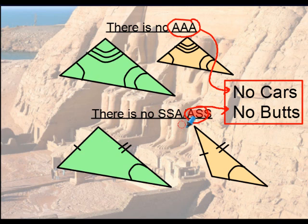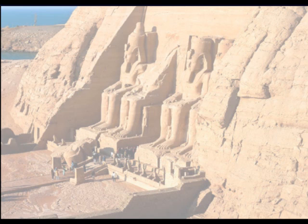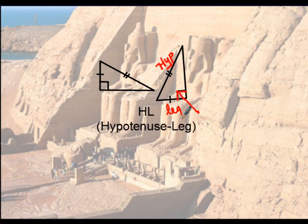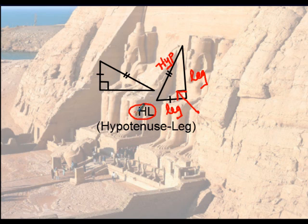There is one special case called hypotenuse-leg, which applies to right triangles only. The hypotenuse is the longest side of a right triangle, and to find it, just look at the right angle — it always points to the hypotenuse. The two smaller sides are the legs. If you already know it's a right triangle and you have the hypotenuse and a leg of one triangle congruent to the hypotenuse and leg of a second, then HL proves the triangles are congruent. This is essentially an angle-side-side case, and it's the only valid one.